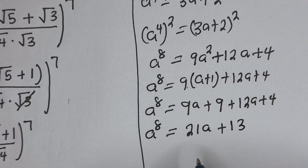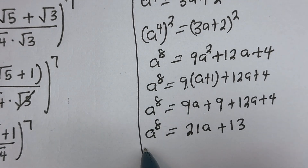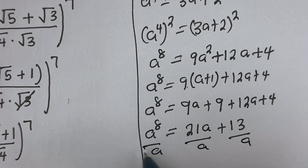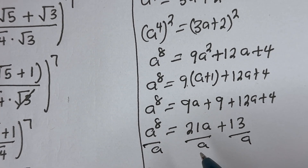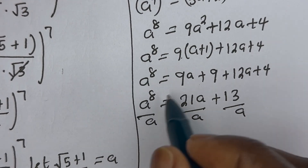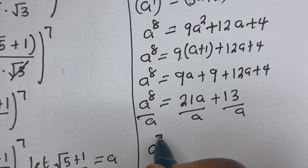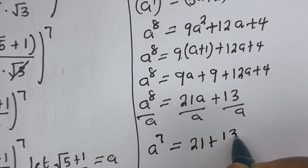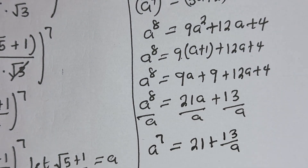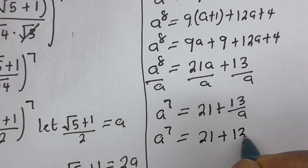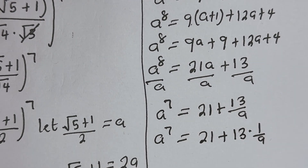At this point, we can divide both sides by a, because we are looking for a to the power of 7. Dividing a⁸ = 21a + 13 through by a gives a⁷ equals 21 plus 13 times (1/a). We know that a equals root 5 plus 1 divided by 2, so 1/a equals 2 divided by root 5 plus 1.